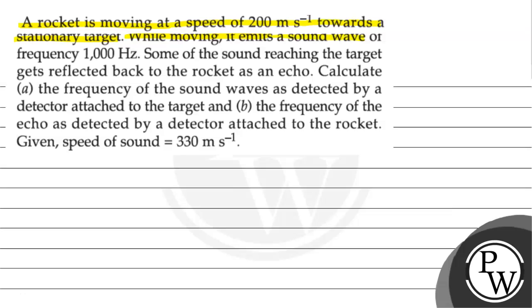While moving, it emits a sound wave of frequency 1000 Hz. Some of the sound reaching the target gets reflected back to the rocket as an echo. Calculate the frequency of the sound waves as detected by a detector attached to the target and the frequency of the echo as detected by a detector attached to the rocket.